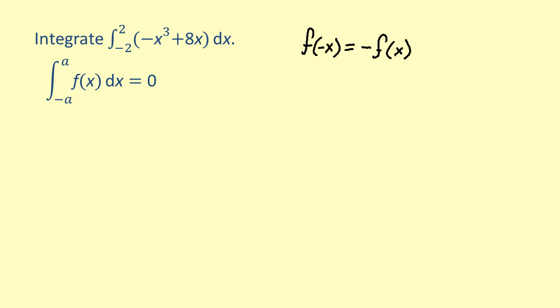Since the given function is defined for all values in the interval, it is also continuous. We already showed that the function is odd, so the integral of the quantity negative x cubed plus 8x dx from negative 2 to 2 is equal to zero.